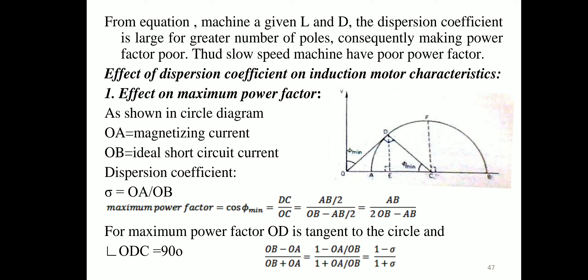From the circle diagram, OA = magnetizing current, OB = ideal short-circuit current. Dispersion coefficient σ = OA / OB. Maximum power factor cos φmin = DC / OC = (AB/2) / (OB − AB/2) = AB / (2×OB − AB). For maximum power factor, OD is tangent to the circle and angle ODC = 90°. Maximum power factor = (1 − OA/OB) / (1 + OA/OB) = (1 − σ) / (1 + σ).